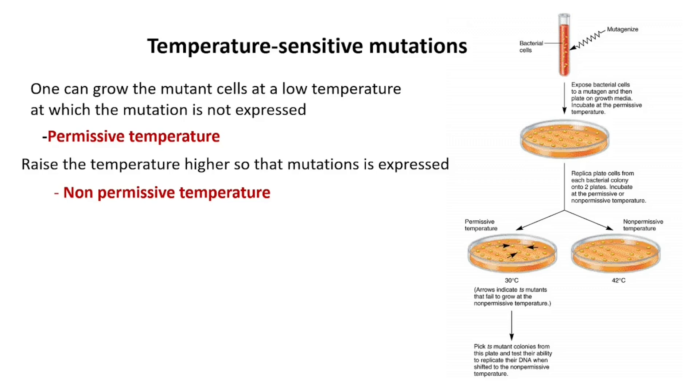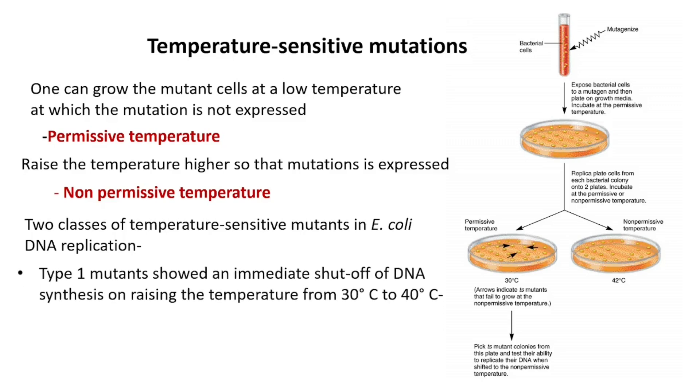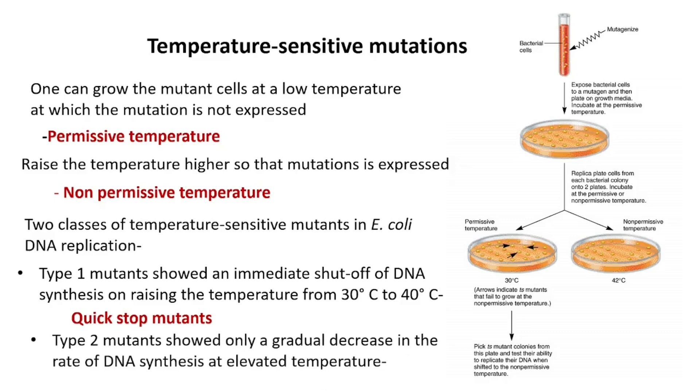As early as 1968, Francois Jacob and his colleagues discovered two classes of temperature-sensitive mutants in E. coli DNA replication. Type 1 mutants showed an immediate shutoff of DNA synthesis on raising the temperature from 30 to 42 degrees. They called them quick-stop mutants. Whereas, type 2 mutants showed only a gradual decrease in the rate of DNA synthesis at elevated temperatures. They were called the slow-stop mutants.